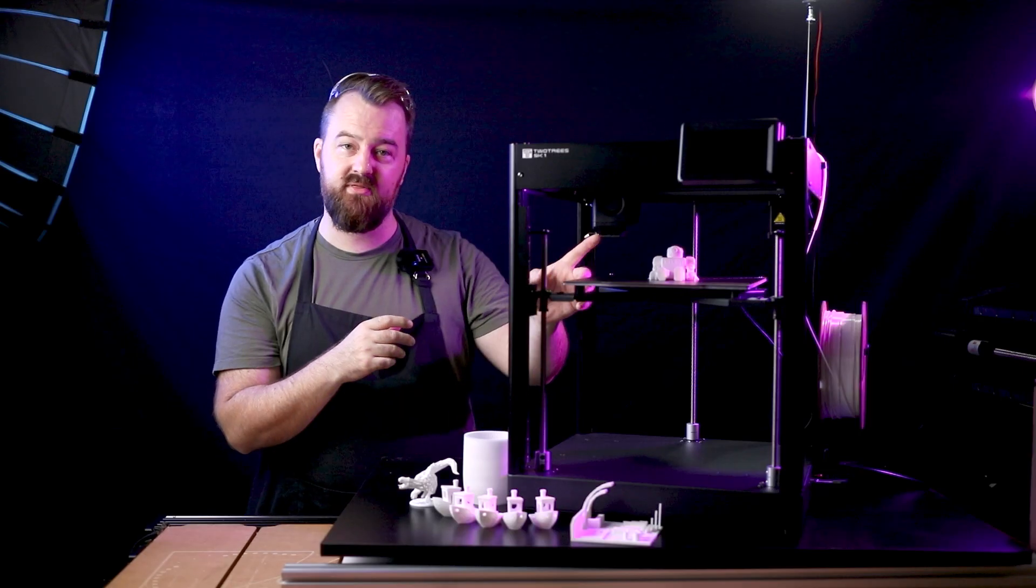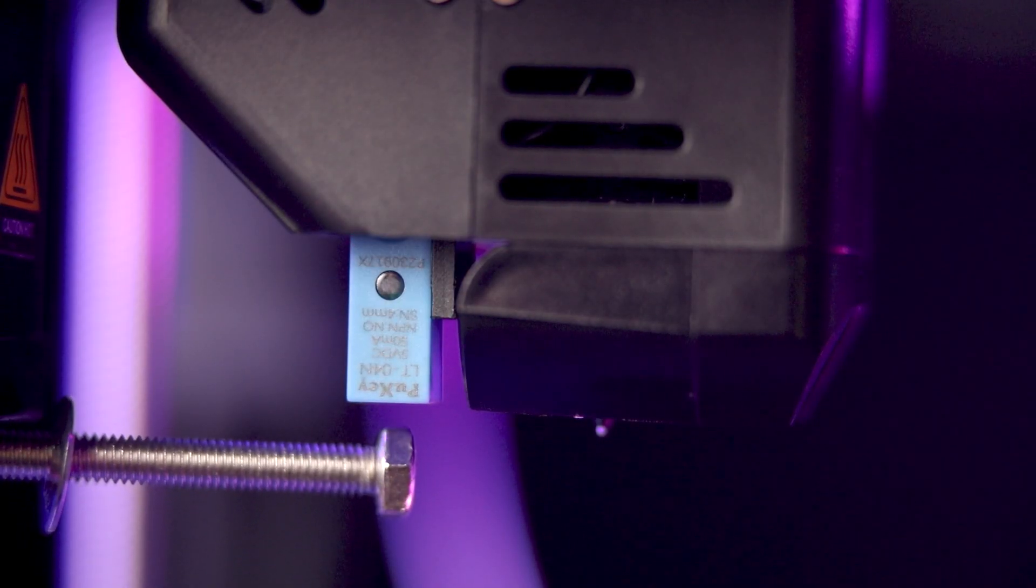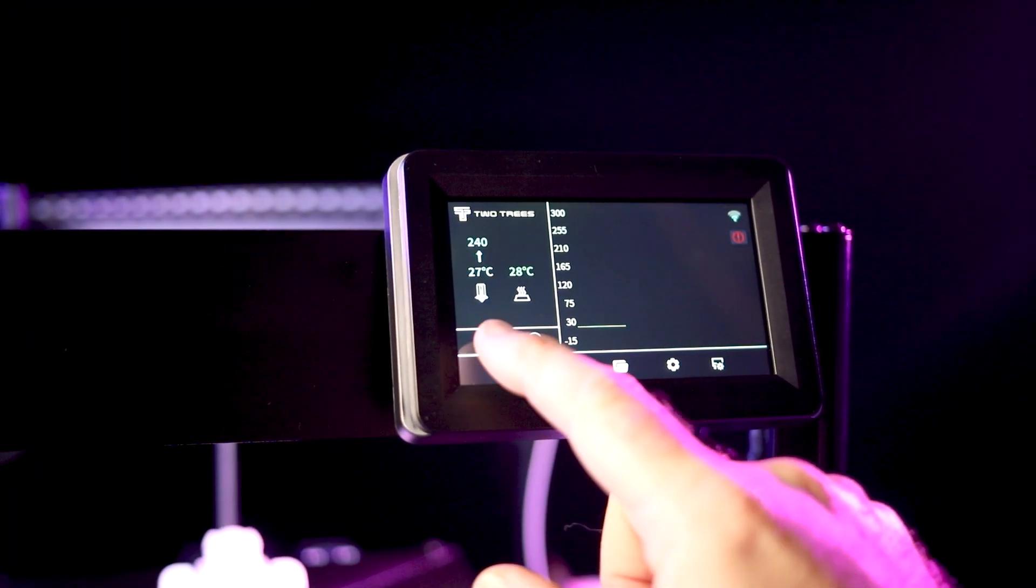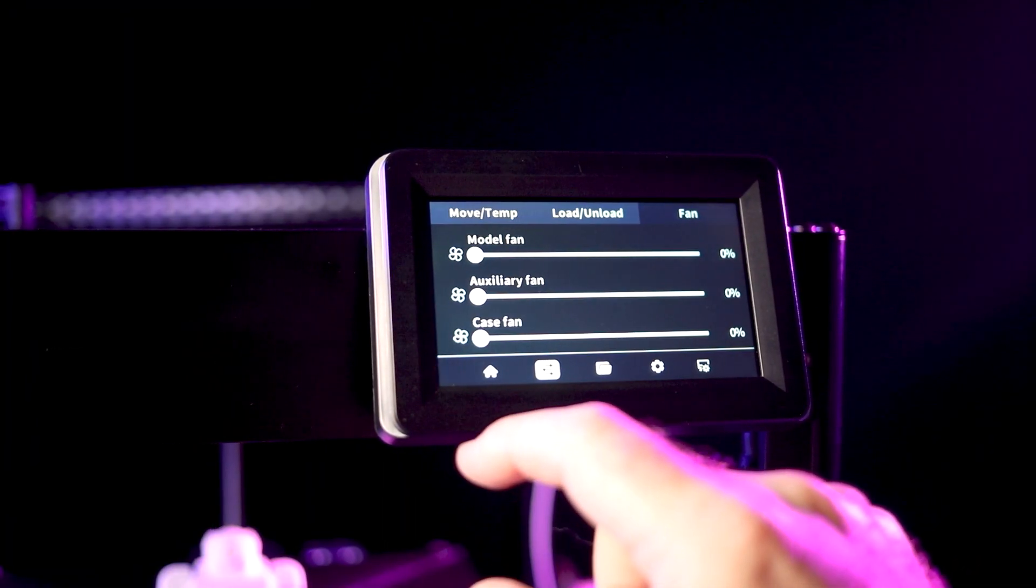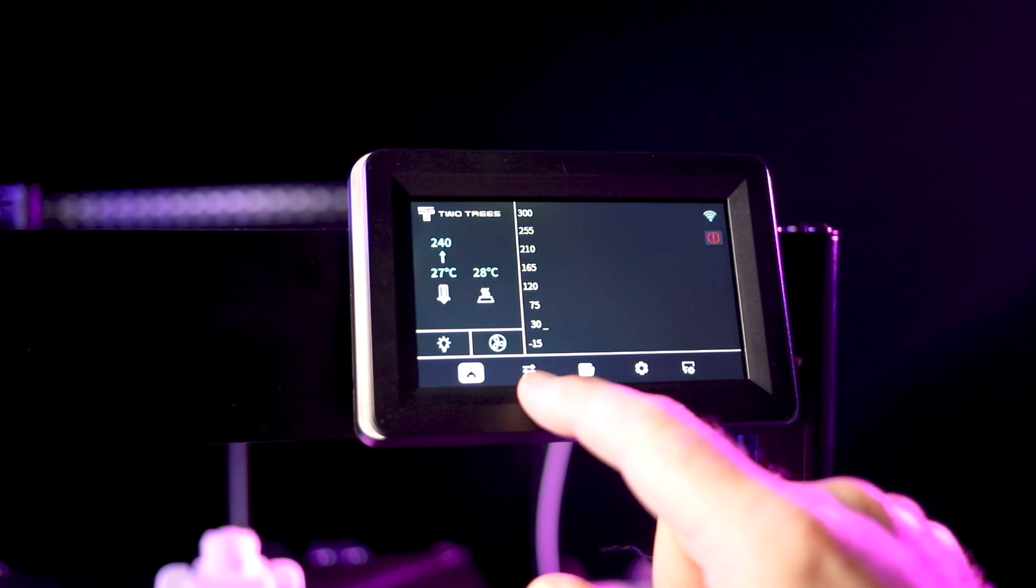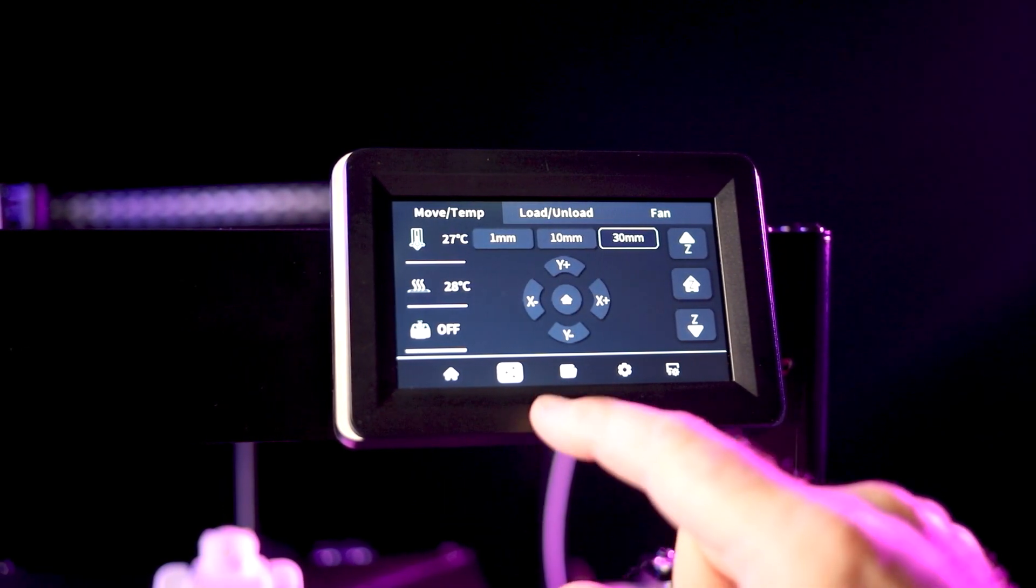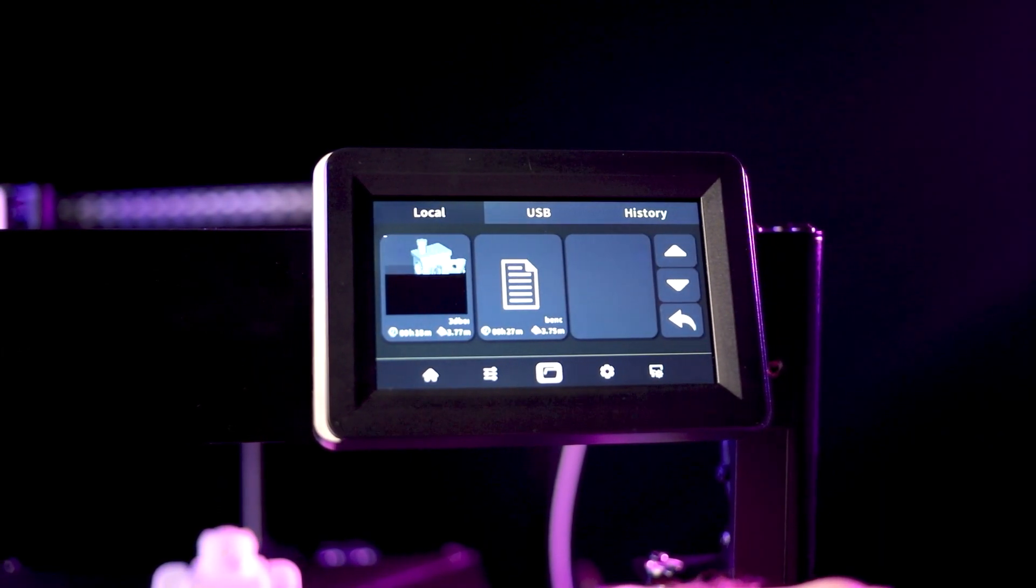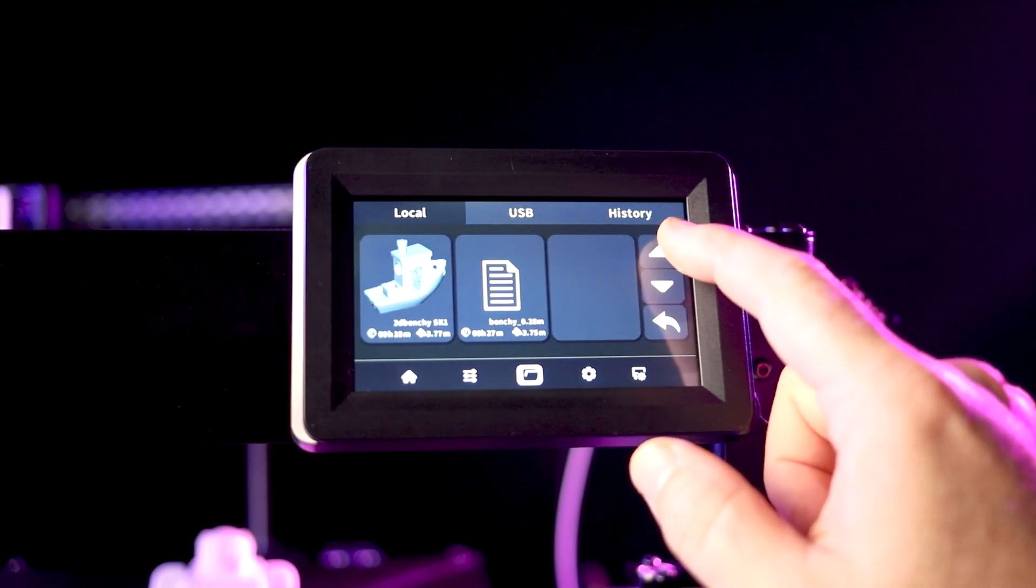It comes with a proximity sensor for the Z probe. It also comes with a really nice LED strip, so it's super easy to see things when you're printing. But I also love the touch screen that they've included. There are some really cool features on that touch screen that you can have access to.